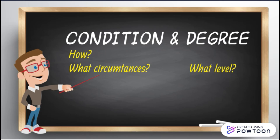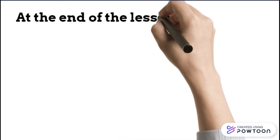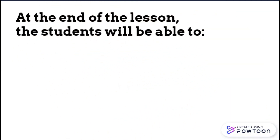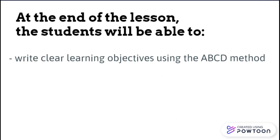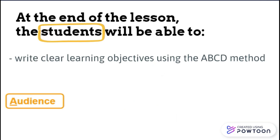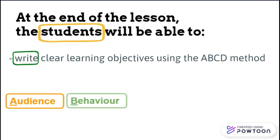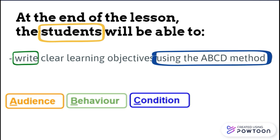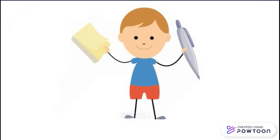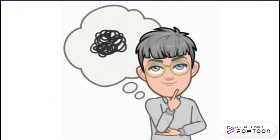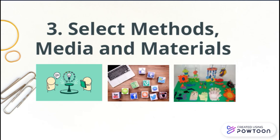Here is a basic example of an objective which includes the audience, the behavior, the condition, and the degree: 'At the end of the lesson, the students will be able to write clear learning objectives using the ABC method.' Here, 'students' is the audience, 'write' is the behavior, 'using the ABC method' is the condition, and 'clear' is the degree.